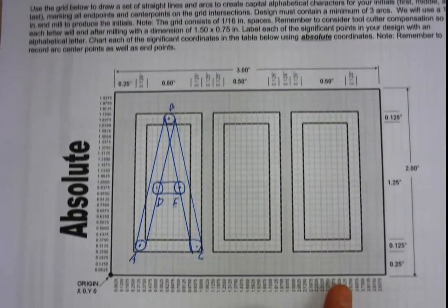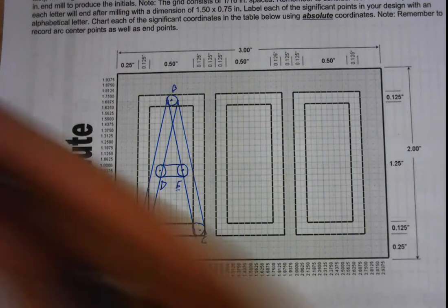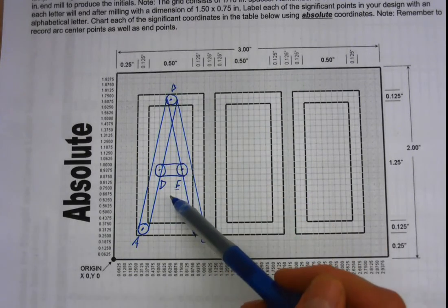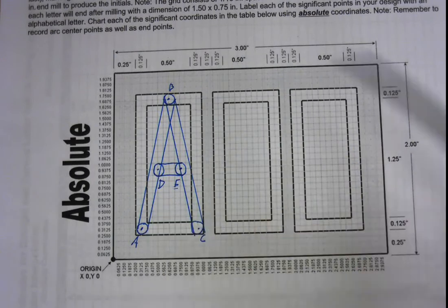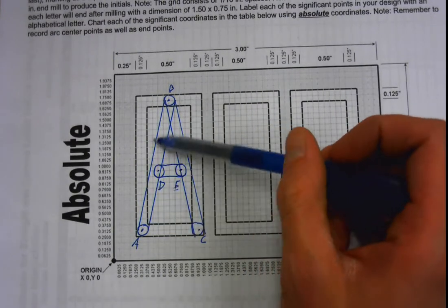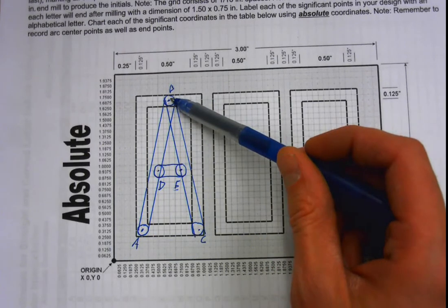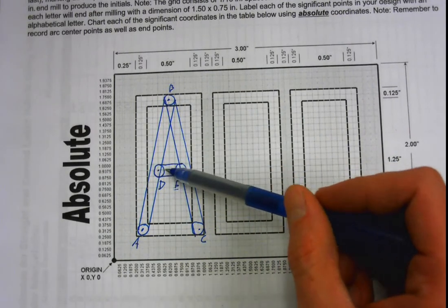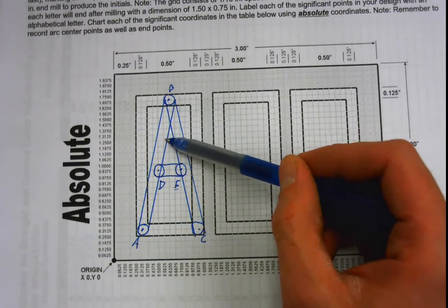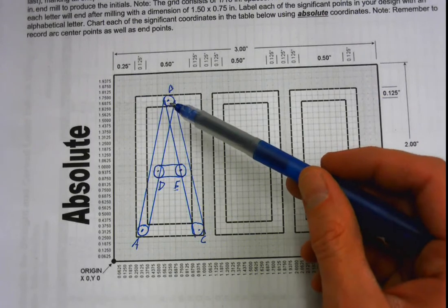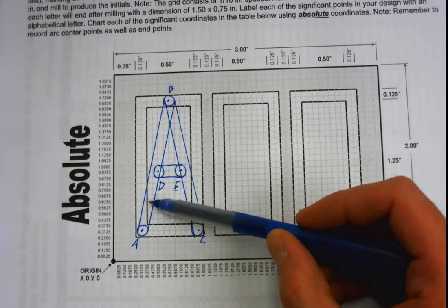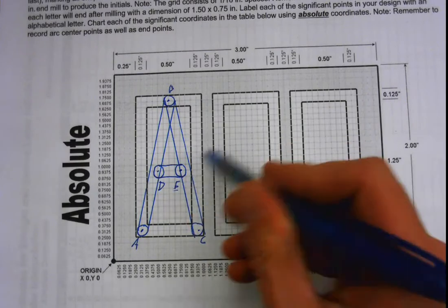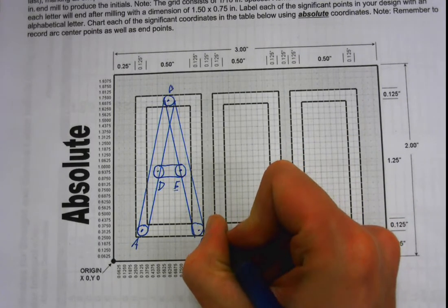My initials are AMG, and I've gone ahead and started my initials inside this block. We want all your initials to fit within these squares. My first initial is A, so I've started my A with point A to point B, B to C, and then I have two more points — D and E. The thickness between these two lines is what's actually going to be milled by our machine. We're using an eighth-inch end mill, and that is about an eighth of an inch wide. So if I was going to do M, I would go to points A, B, C, D, E.